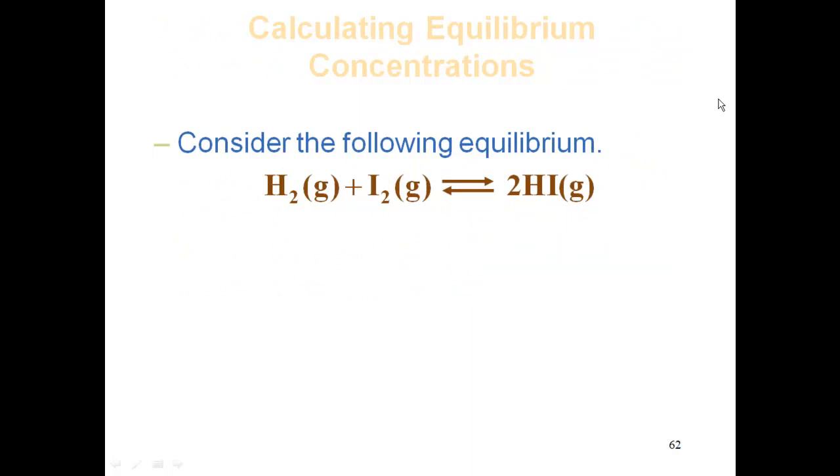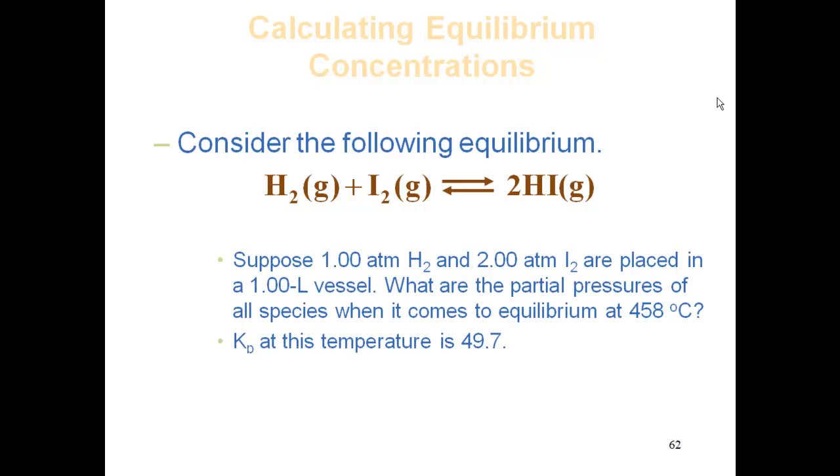Consider the following reaction: H2(g) + I2(g) ⇌ 2HI(g). Suppose 1.00 atm H2 and 2.00 atm I2 are placed in a 1.00-L vessel. What are the partial pressures of all species when it comes to equilibrium at 458°C? Kp at this temperature is 49.7.